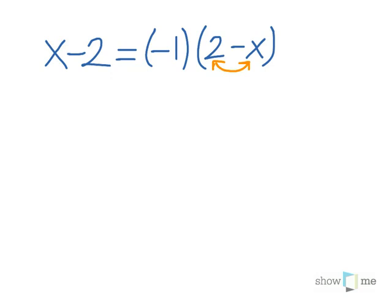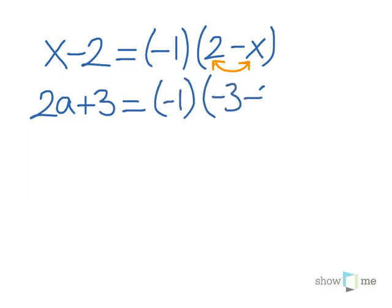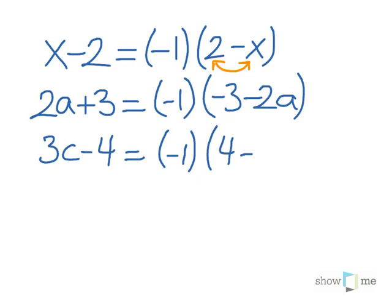Another example: if you have 2a + 3, this will be equal to -1 times (-3 - 2a), because when you expand the brackets you will get 2a + 3. Or if you have, say, 3c - 4, it will be -1 times (4 - 3c). So you just swap the places of the terms and multiply by -1.